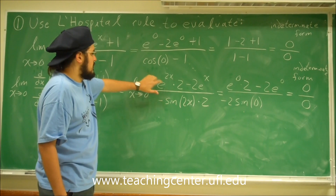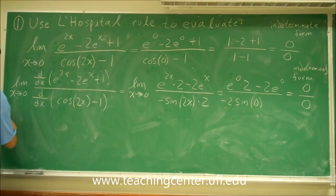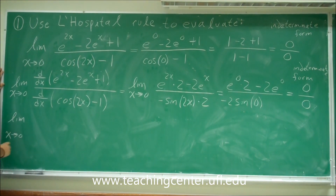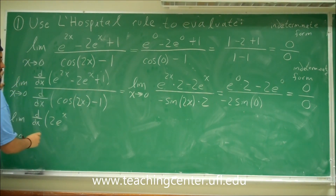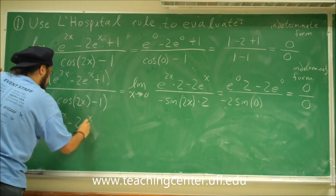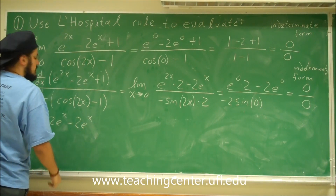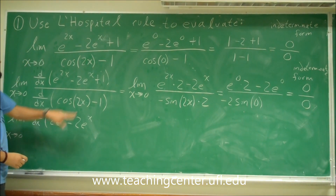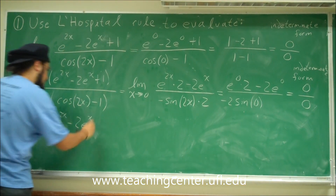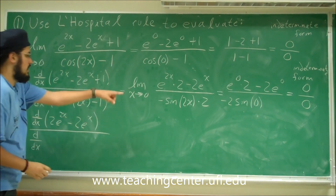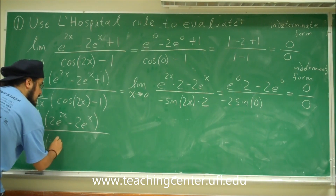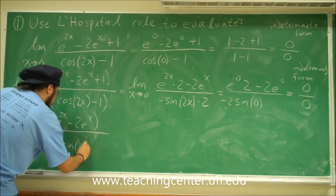So with this one, we'll take the derivative again. The limit as x approaches 0 of d/dx of 2e to the 2x minus 2e to the x, divided by d/dx of minus 2 sine 2x.